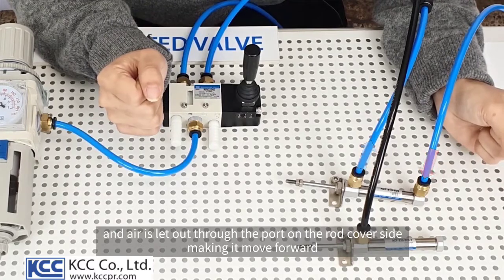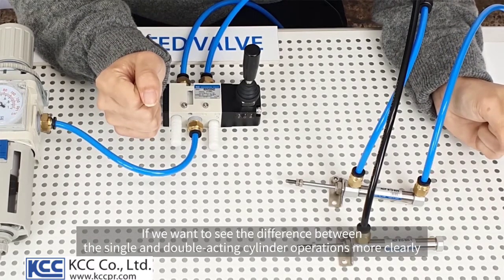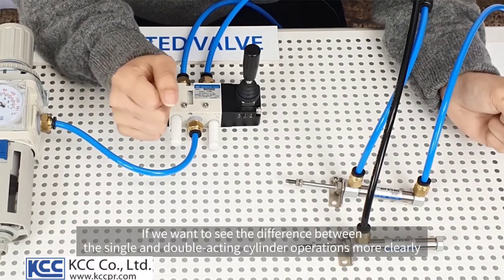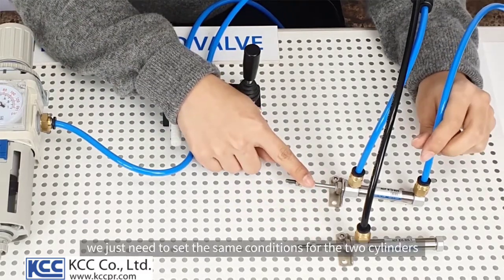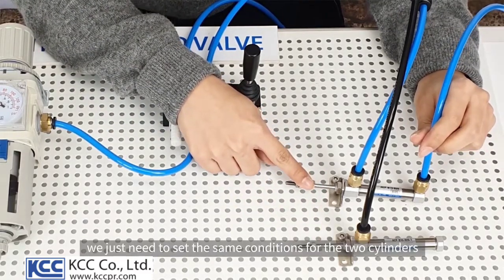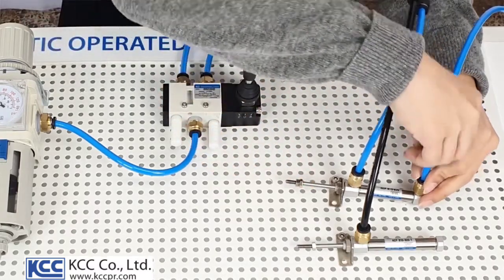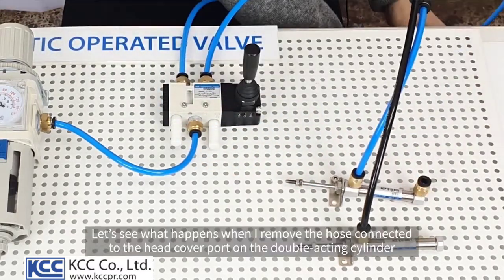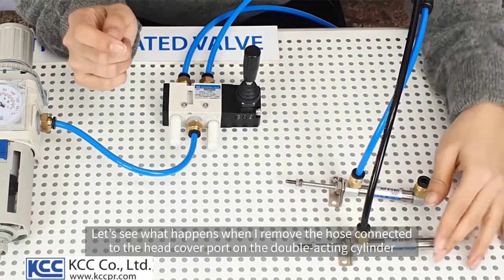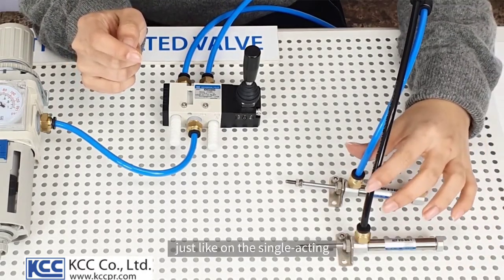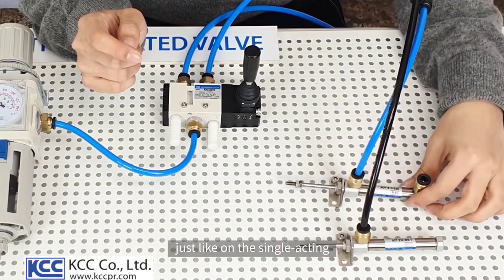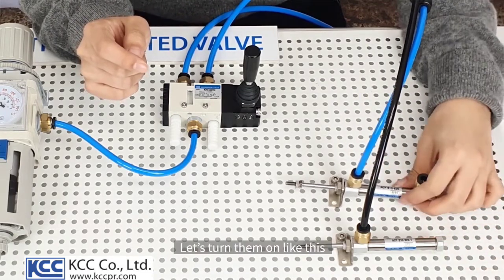If we want to see the difference between the single and double-acting cylinder operations more clearly, we just need to set the same conditions for the two cylinders. Let's see what happens when I remove the tube connected to the head cover port on the double-acting cylinder, just like on the single-acting. Let's turn them on like this.